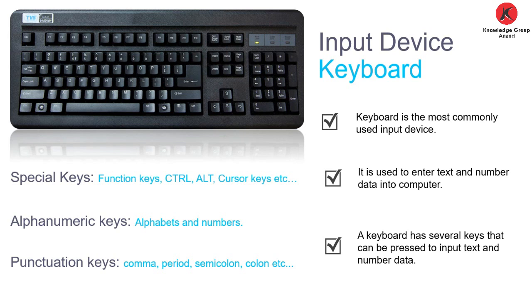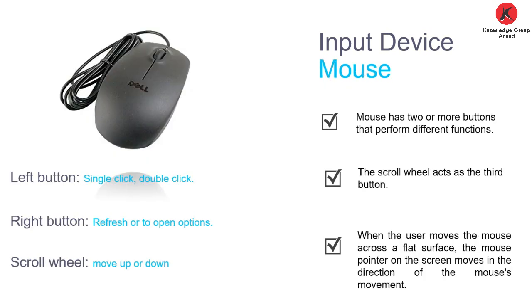The first input device is the keyboard. A keyboard is the most commonly used input device. It is used to enter text and numbers into the computer. A keyboard has several keys categorized into special keys like function keys, control, alt, and cursor keys. Alphanumeric keys cover alphabets A to Z and numbers 0 to 9. Punctuation keys include comma, semicolon, colon, and the at-sign. The keyboard is the first and standard input device.